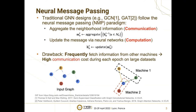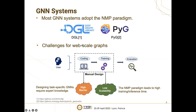The paradigm iteratively aggregates the neighborhood information and then updates the message via neural networks. This paradigm works well on small datasets, but for large datasets we have to partition the graphs and store them on different machines. While the neighbors may be stored on different machines, neighborhood expansion requires fetching information from other machines. This leads to high communication costs, as aggregation is required for each batch of nodes during training. Despite the high communication costs, most existing graph neural network systems adopt the neural message parsing paradigm, such as DGL and PYG.